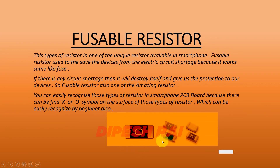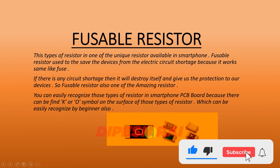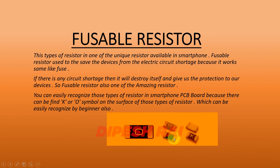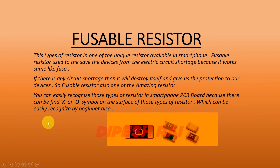If you are a beginner in mobile chip level training, you can easily recognize these types of resistors. You can see there is an 'O' and there is a 'K' — those kinds of symbols can be found on this kind of fusible resistor. So if you see those symbols anywhere on any type of resistor, remember that this is the fusible resistor. Today we discussed about the resistors available inside the smartphone. I hope you got a few ideas about the resistor. If you have any kind of confusion, let me know in the comment section and I'll make a separate video on that topic. I'll come back with another new video — until then, goodbye, see you again.